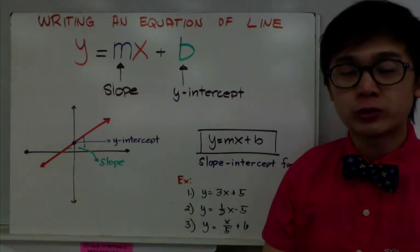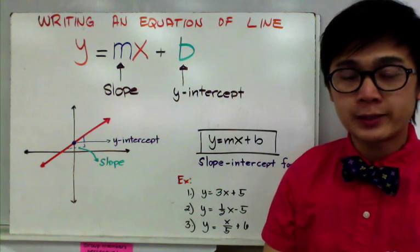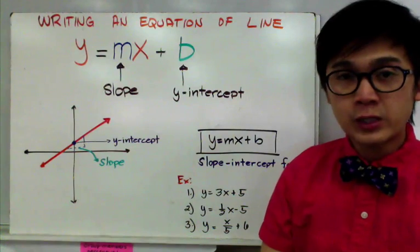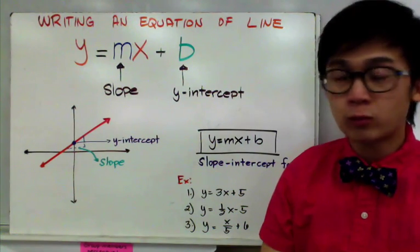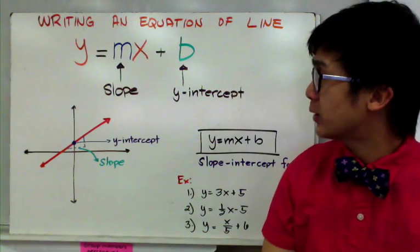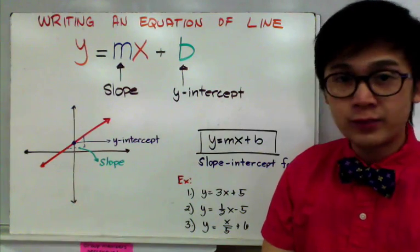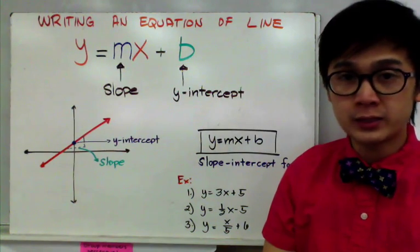Today we're going to learn how to write an equation of a line in slope-intercept form. The slope-intercept form is given by the formula y equals mx plus b, where m is your given slope and b is your y-intercept.